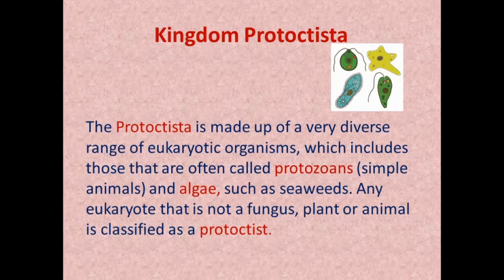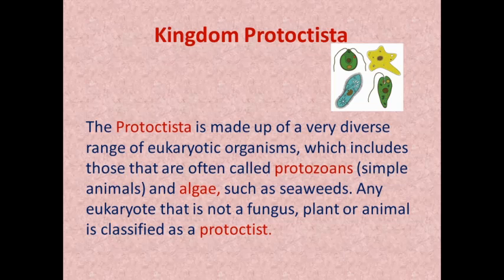Protocytista is made up of a very diverse range of eukaryotic organisms, meaning all of them have a complete nucleus. This includes those often called protozoans — simple animal-like organisms — and algae such as seaweeds. Some members have characters of animals, called protozoans, and some have characters of plants, called algae, but both are in the same group. Any eukaryote that is not a fungus, plant, or animal is classified as a Protocytist.